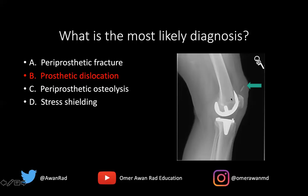I also want to point your attention to the relative lucency along the anterior femur — this is normal stress shielding. It is a normal response to the altered weight-bearing mechanics that occur with a total knee arthroplasty. Most of the weight-bearing occurs along the posterior aspect of the joint and femur, which is why you get sclerosis posteriorly and relative radiolucency along the anterior femoral cortex.